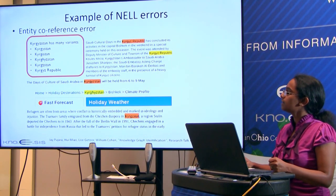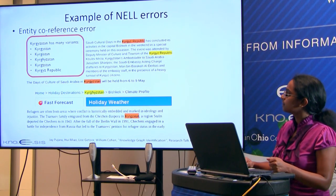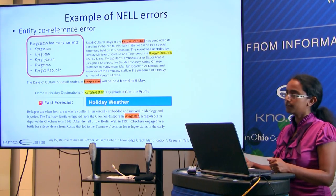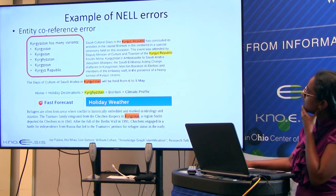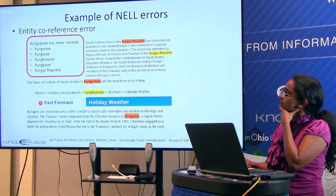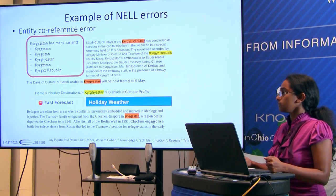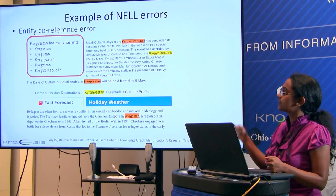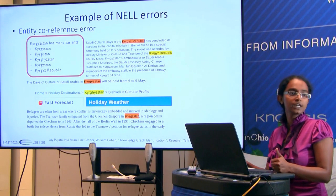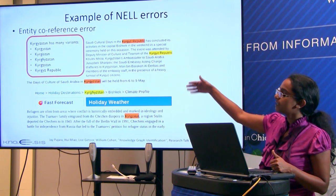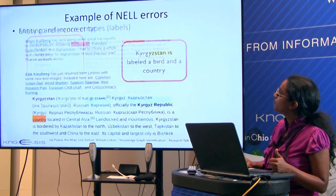To give an idea of some types of errors: one is the entity co-reference problem. For example, for the country Kyrgyzstan, there can be many syntactic variations in extracted information. Instead of having one entity for the country, they will have multiple variations referring to the same entity.